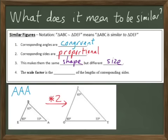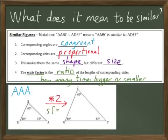One term that you need to know is the scale factor. That's the ratio of the lengths of the corresponding sides, or another way you could say it is how many times bigger or smaller. So in the example that I have down below, the scale factor would be two because the triangle became two times larger.